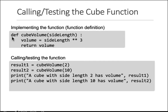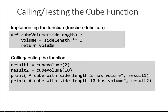Then what's written inside the function — how do you implement it? You write a colon, and just like with if and while, you tab everything in. Tab means all this belongs to this function. Inside, volume is set to side_length to the power of three. Then there is a keyword called return — you return the variable volume. The black box takes side length in and gives the volume back.